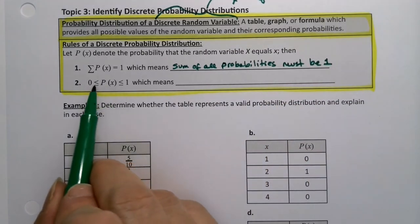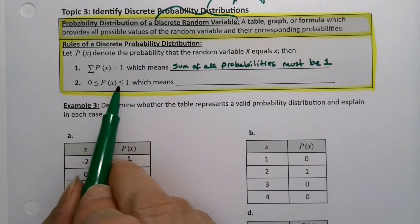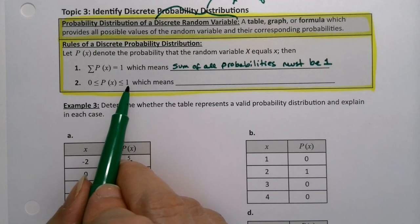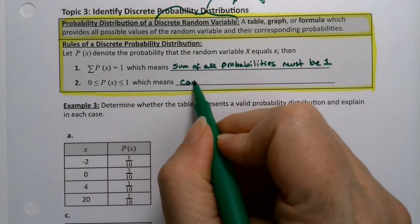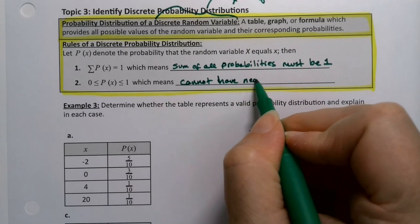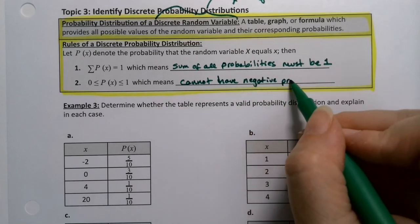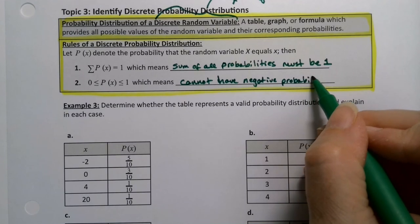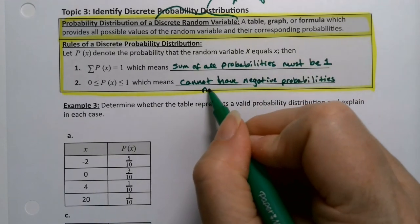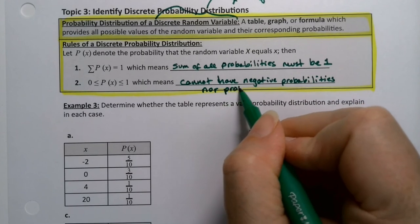And this one's saying all the probabilities must be between zero and one. No negative probabilities and no probabilities over one. You cannot have negative probabilities. And probabilities over one will get you into trouble on the first part as well because then the sum would not be one.